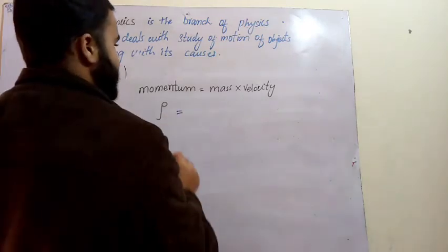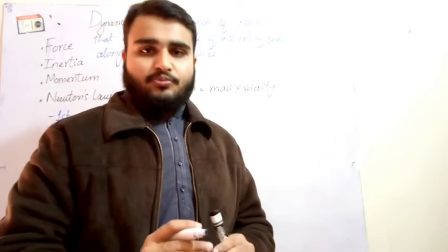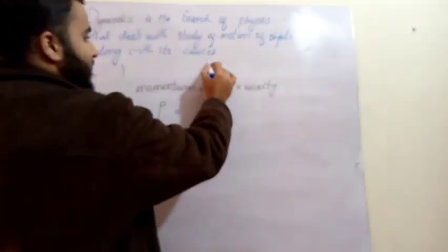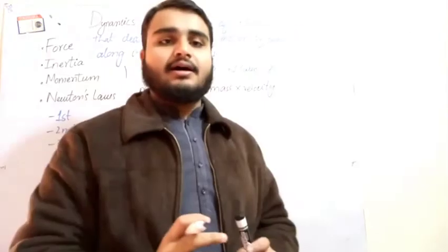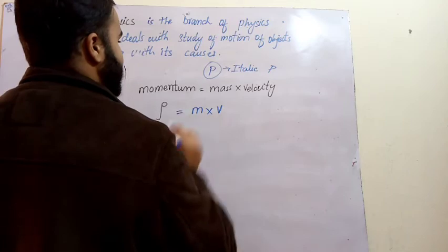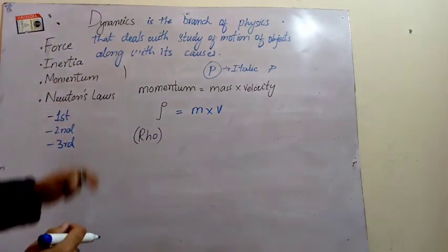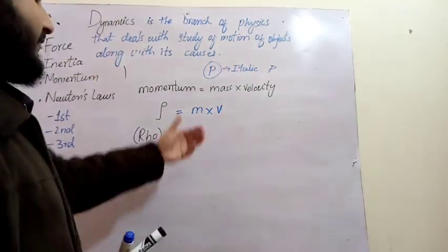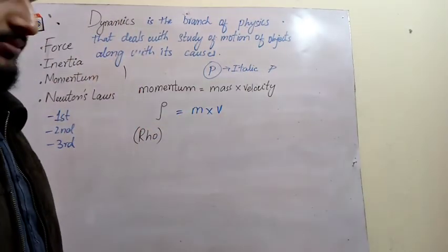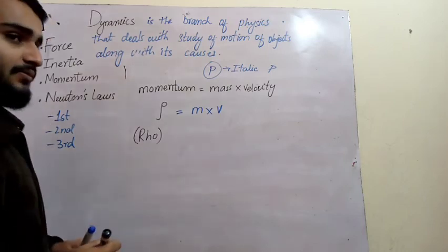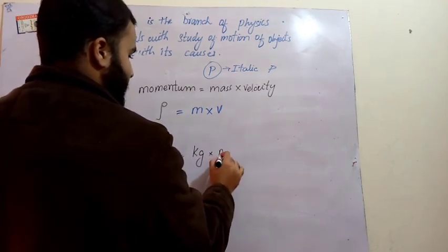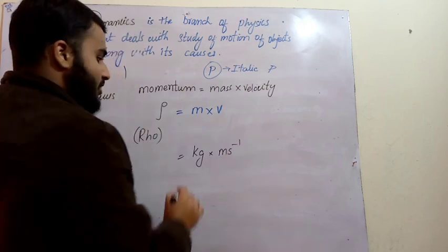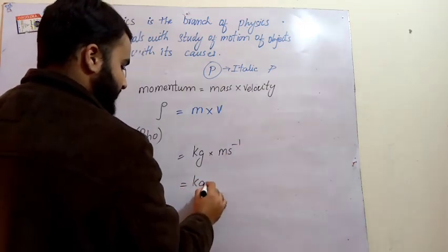So momentum is represented as p, written in italic. The product of mass and velocity is called momentum. The unit of momentum is kg·m/s (kilogram meter per second), which you can also write as kg m s⁻¹.